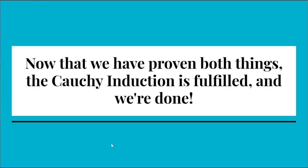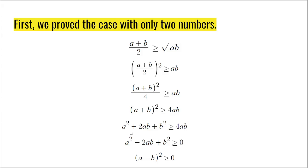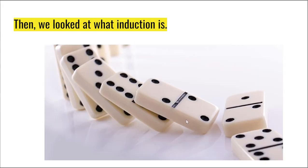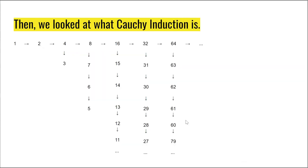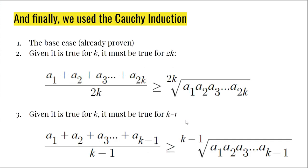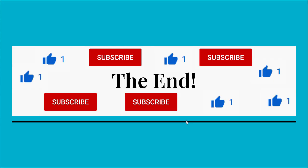And that's it! Now that we've proven both things, the Cauchy induction is fulfilled and we're done. Here's a summary of what we've done: First, we proved the case with only two numbers. Then, we looked at what induction is and proved a different theorem as an example. Then, we looked at what Cauchy induction is. And finally, we used the Cauchy induction by proving the base case — which was already proven since it's the case with 2 — then showing that if it's true for k it must be true for 2k, and if it's true for k it must be true for k − 1.